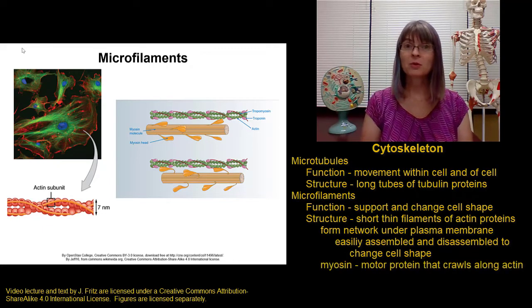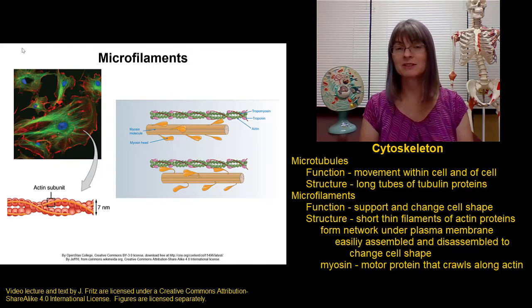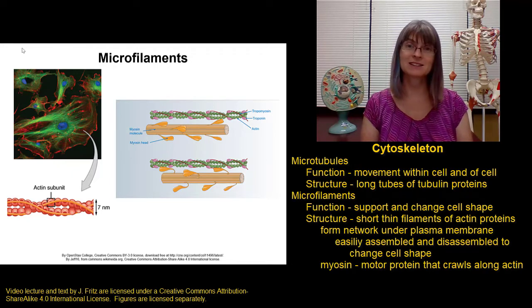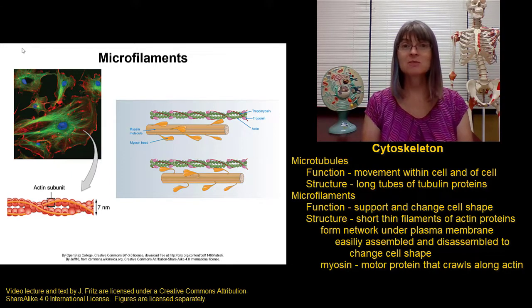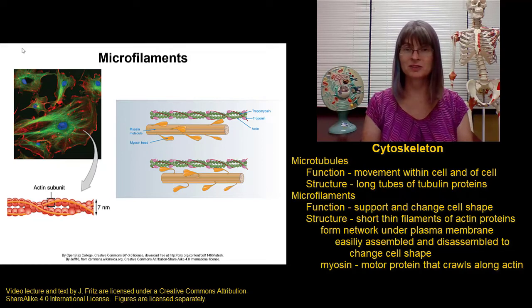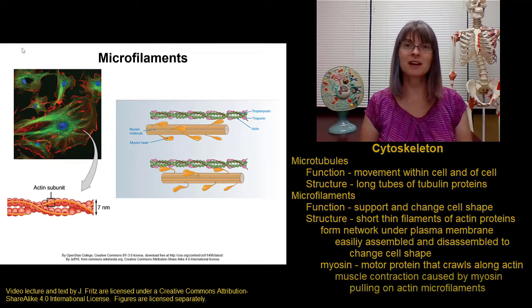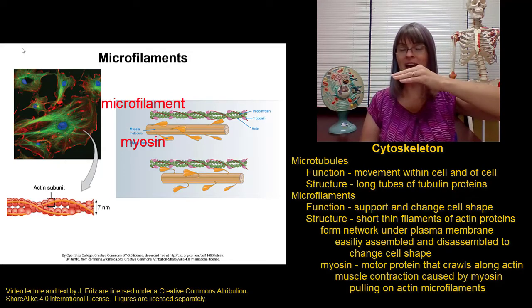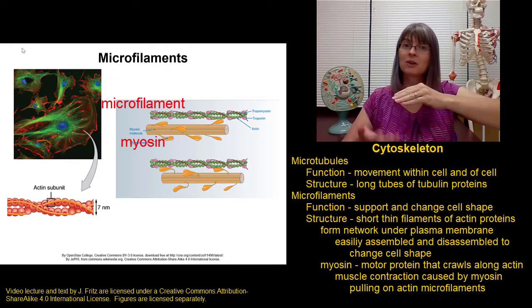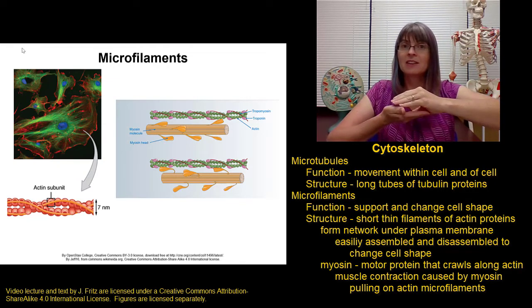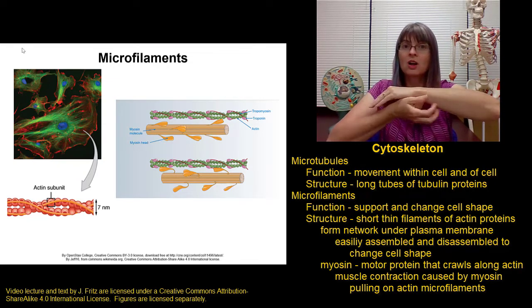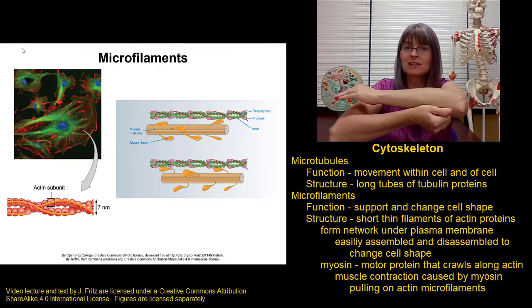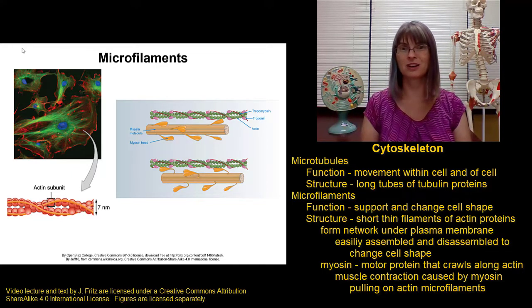There is a motor protein that can crawl along actin microfilaments. This protein is called myosin. Myosin is especially important in muscle cells. In muscle cells, we have microfilaments of actin, and we also have bundles of myosin proteins, and these myosin proteins crawl along the actin filaments in order to cause a muscle contraction.